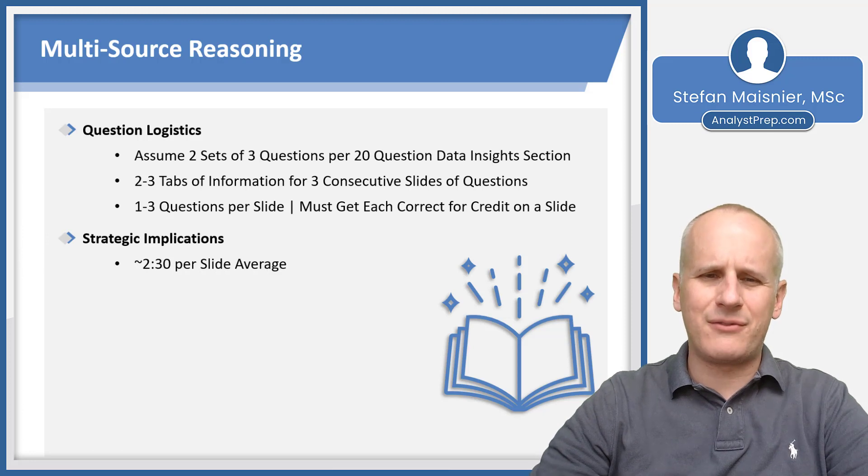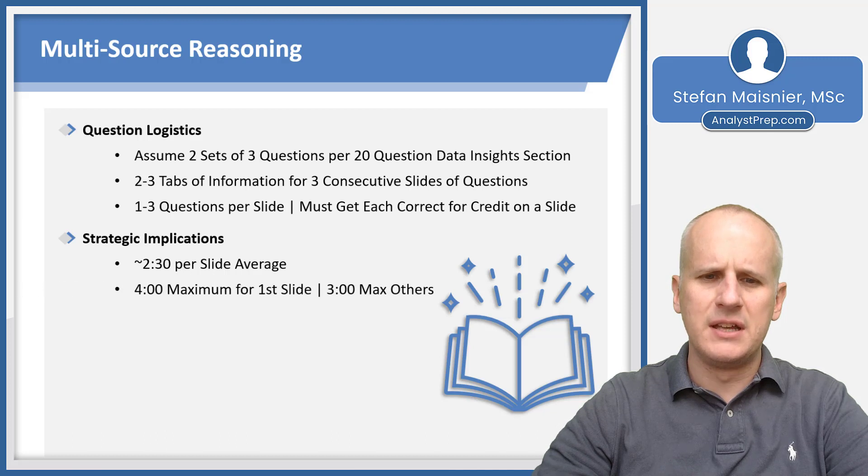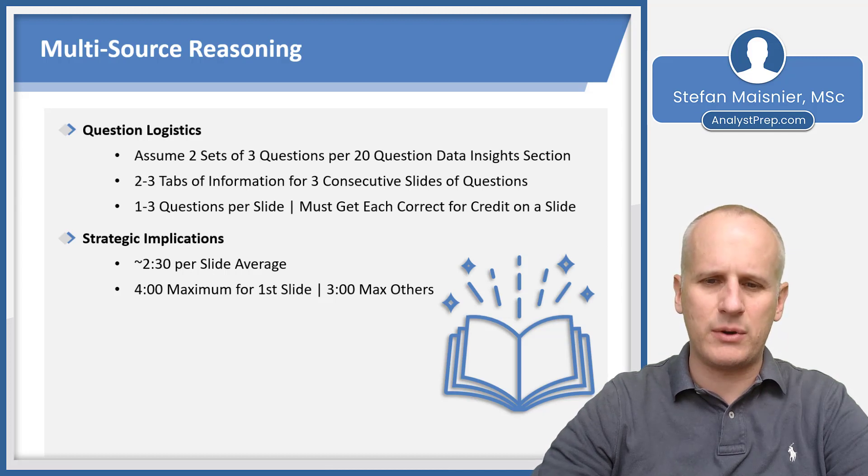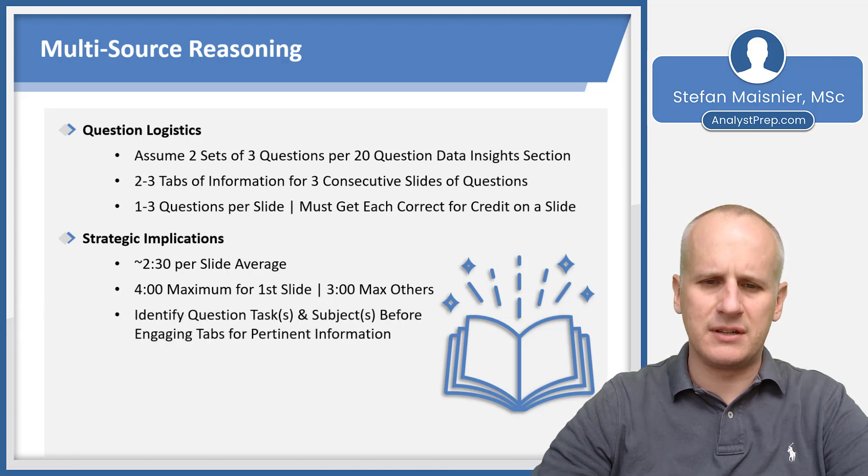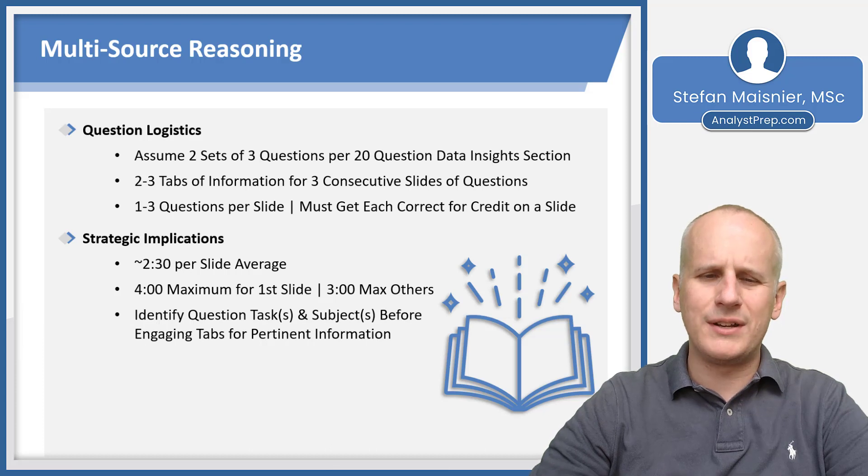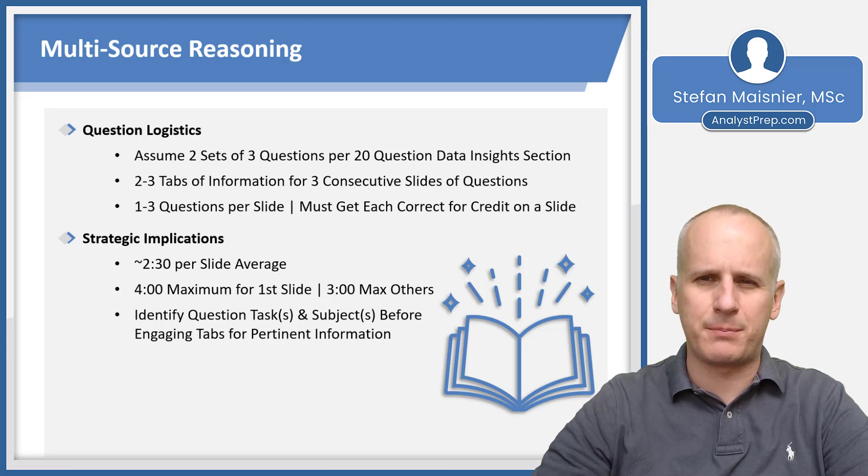Strategically, you want to average about two and a half minutes per slide for the multi-source reasoning, but you can spend up to four minutes on the first slide if you need to engage with the tabs in their entirety to answer that question. But you'll have a hard three-minute max for the other slides of a multi-source reasoning question set. You'll want to hear and identify the question task and the subject of that question before engaging the relevant tabs for pertinent information.